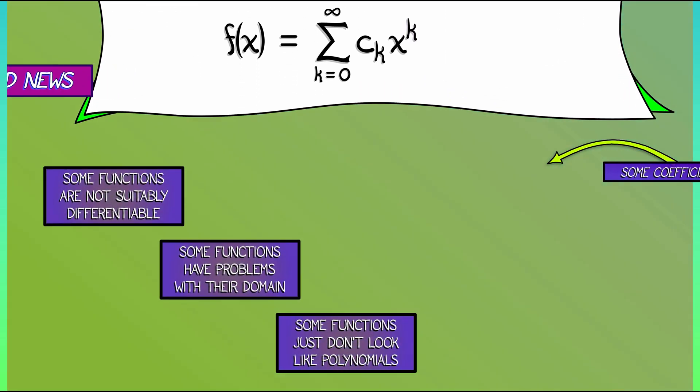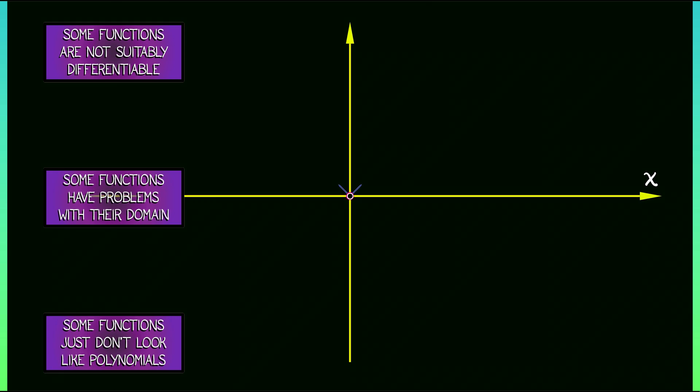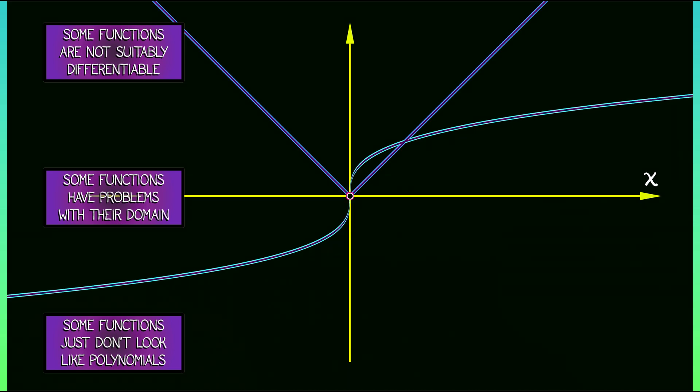For example, take something like the absolute value of x or cube root of x. There are problems with the derivatives at the origin.